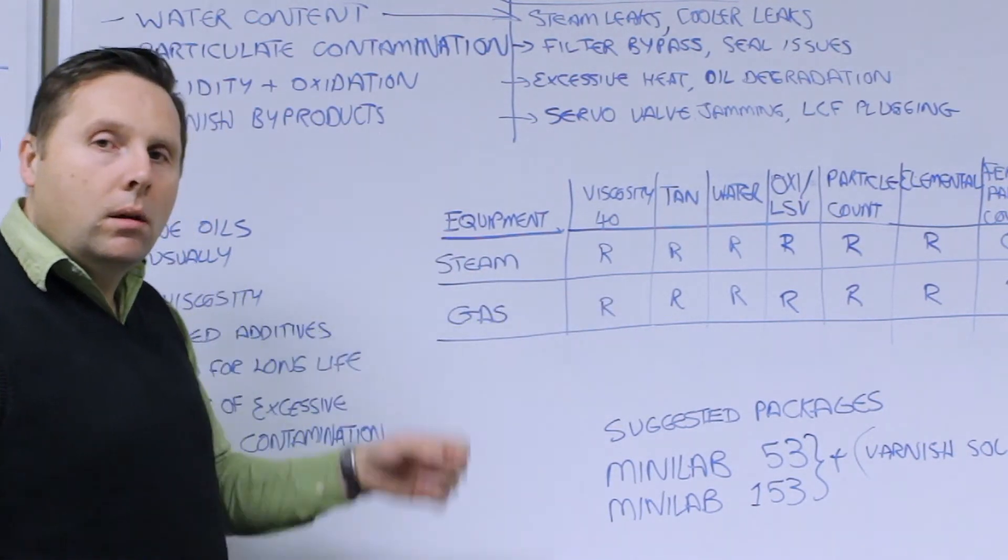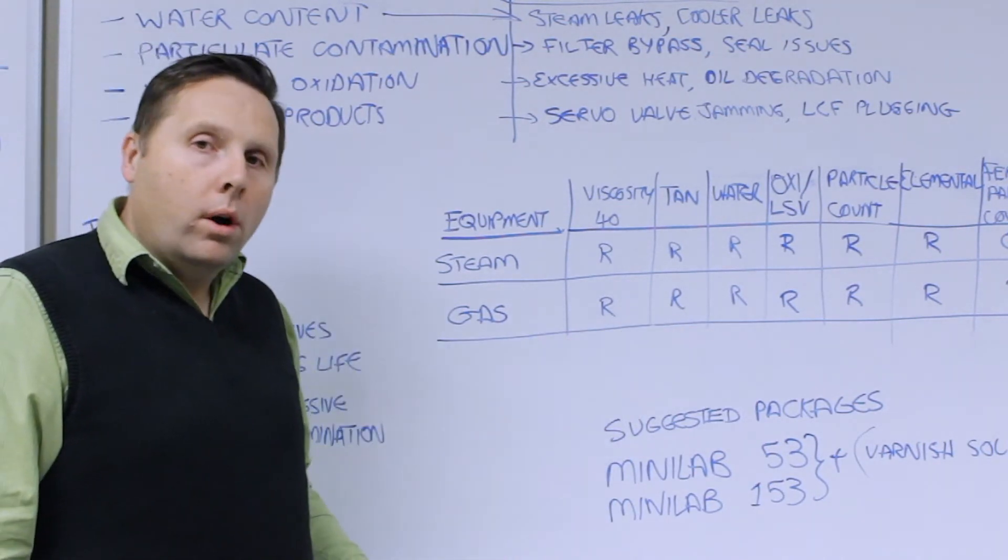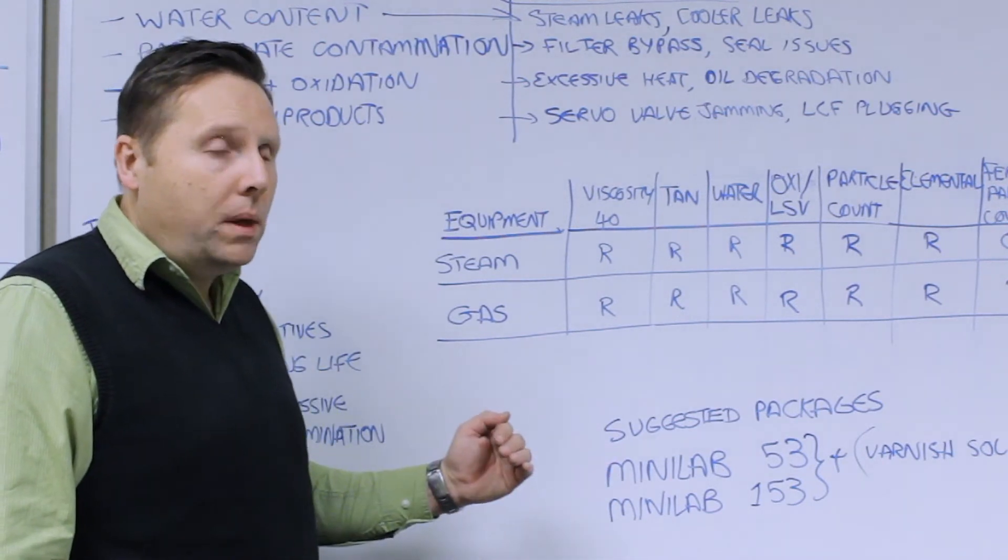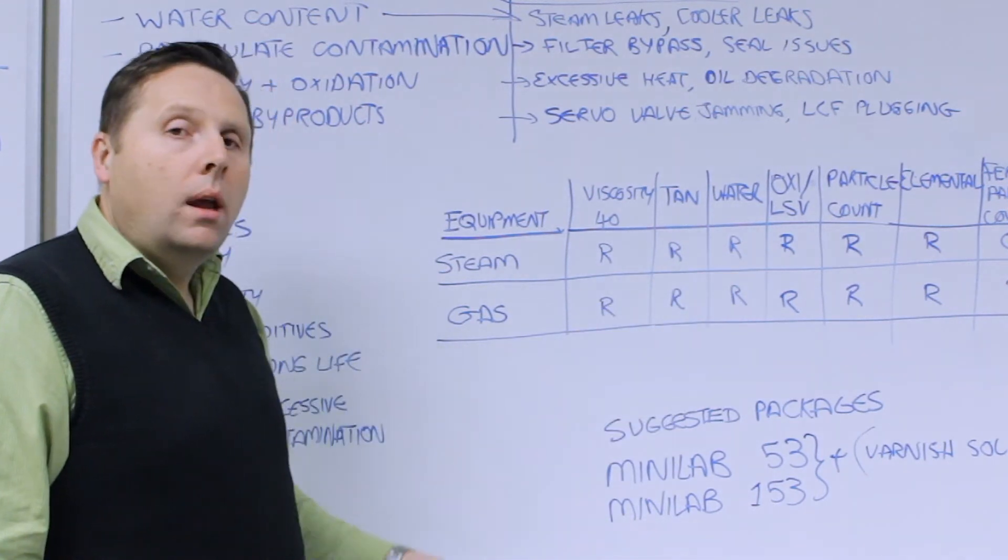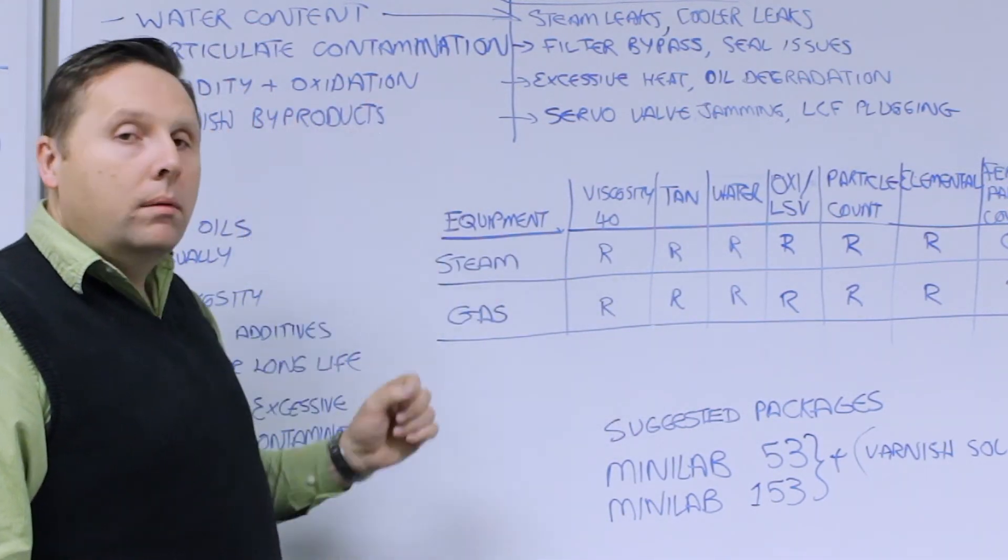We want to look at total acid number. It's indicative of the overall oxidation levels. We want to look at water content, usually low amounts of water for steam turbines. It's 100 ppm is the maximum limit. We want to look at oxidation. That's indicative of lubricant byproducts.